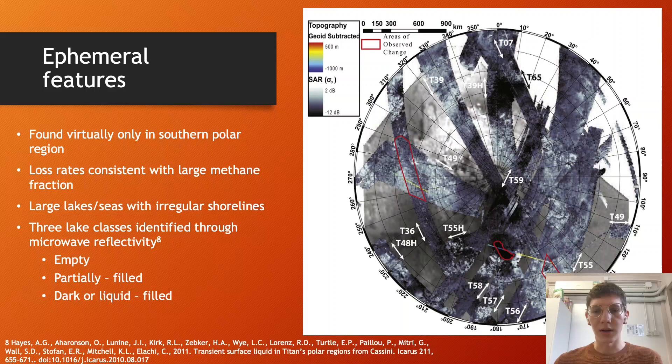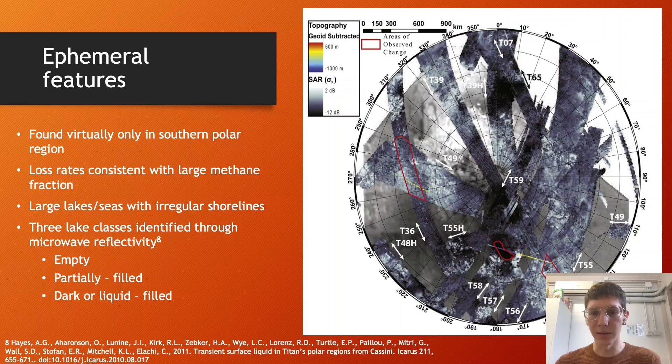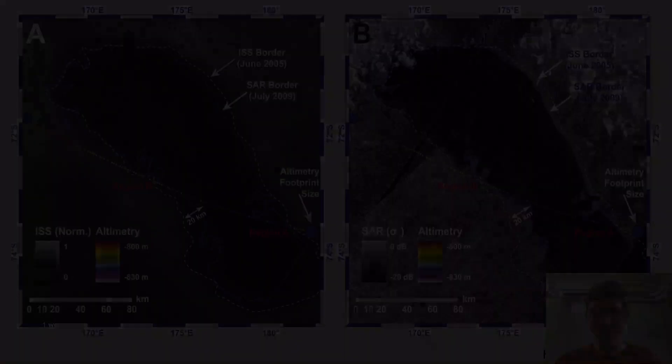Three classes of lakes have been identified: empty lakes, partially filled lakes, and dark or liquid filled lakes based on the microwave reflectivity of Titan's surface, using the normalized backscatter cross section, which is a non-dimensional quantity that describes received radar power as compared to an isotropically scattering surface.